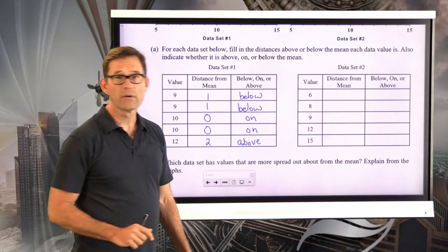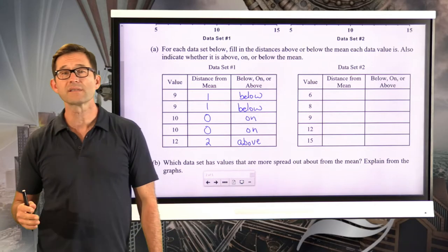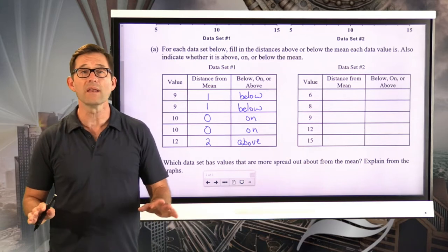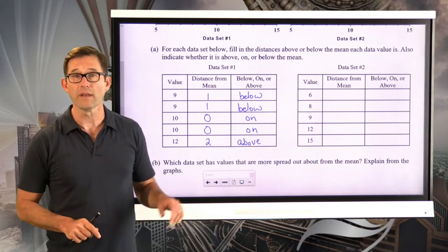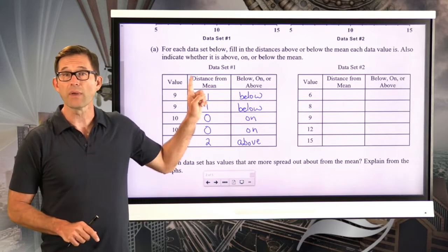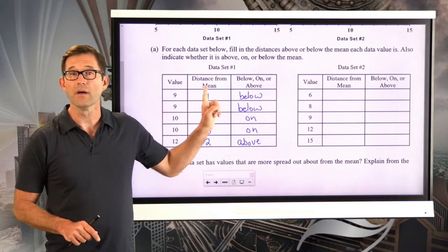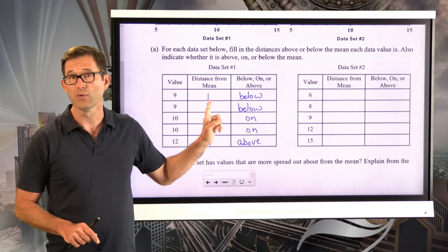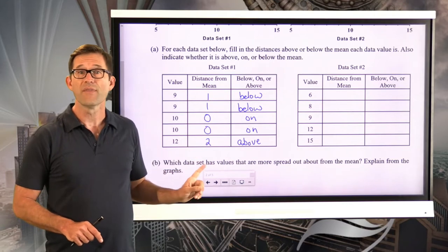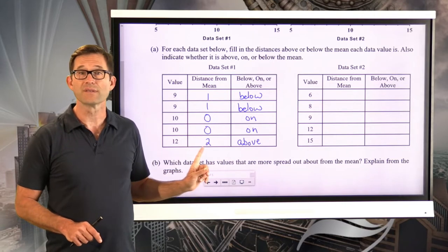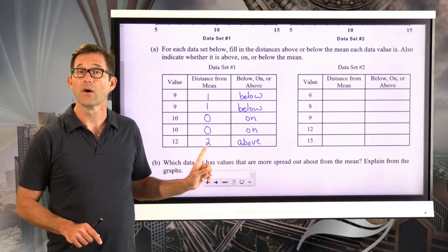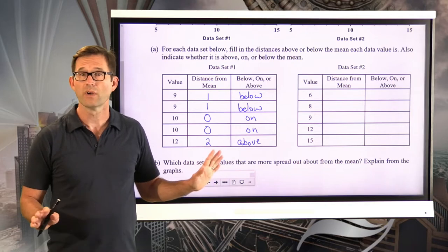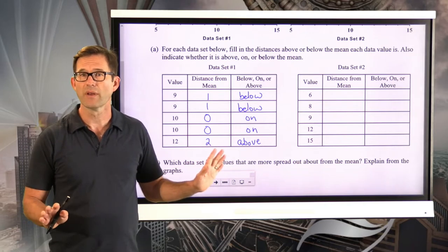From our last lesson, interpreting the mean as a balance point: notice when we add up the distance below the mean — 2 units — that's equal to the distance above the mean, also 2 units. The distances below and above always balance. Simple enough.